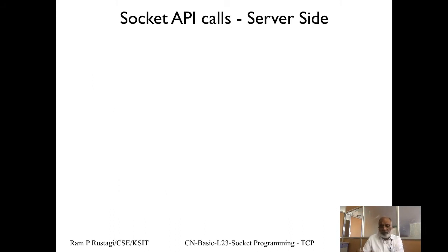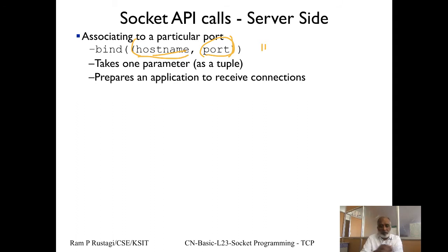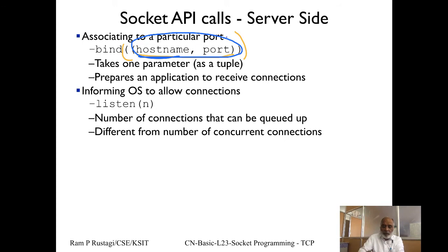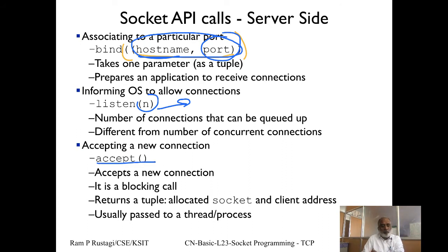For bind, it requires a tuple of hostname and port number. If you give an empty string as the hostname, that means listen on all IP addresses; or you can specify a particular IP address. The port number is mandatory. A common Python mistake is not passing a tuple — bind takes a single parameter that is itself a tuple of two values. For listen, the argument N means that many connections can wait in the queue before the server calls accept.